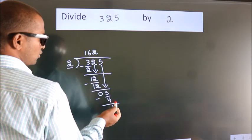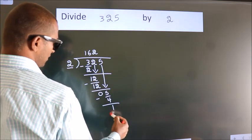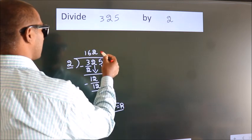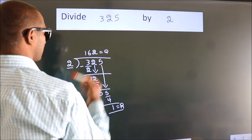No more numbers to bring down, so we stop here. This is our remainder, this is our quotient. The quotient will be 162 and remainder 1.